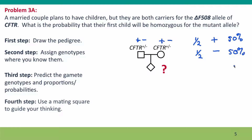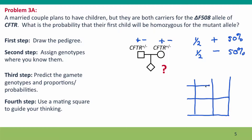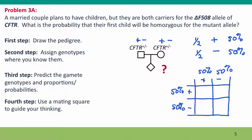Now we need to think about how these gametes come together in the child. We can draw a mating square to guide our thinking, even though we're thinking about just one person. We draw two compartments for the mother's gametes and two for the father's gametes — the size of each compartment now represents the probability of that gamete genotype. We've got plus and minus gametes at 50% each from both parents, giving child genotypes of plus-plus, plus-minus, plus-minus, and minus-minus.